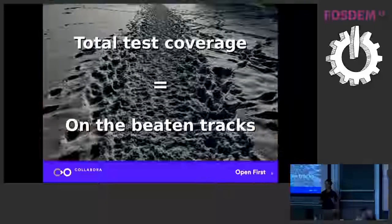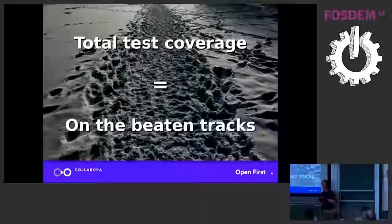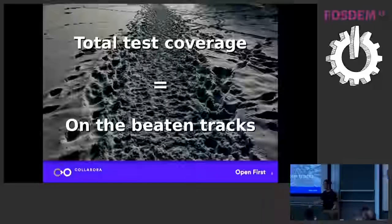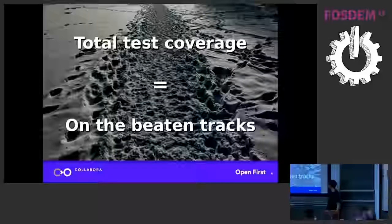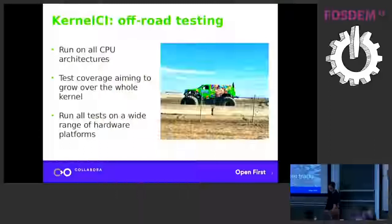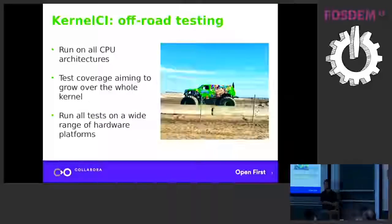Basically, what you end up with is that there are things in the kernel that are very well tested because people care about it, and other things that are not well tested at all. If you look at all the code, all the APIs, all the drivers in the kernel, you have some things that are really well tested and some that are not - it's always the same things being tested. Kernel CI is trying to go off-road a little bit and bridge that gap.